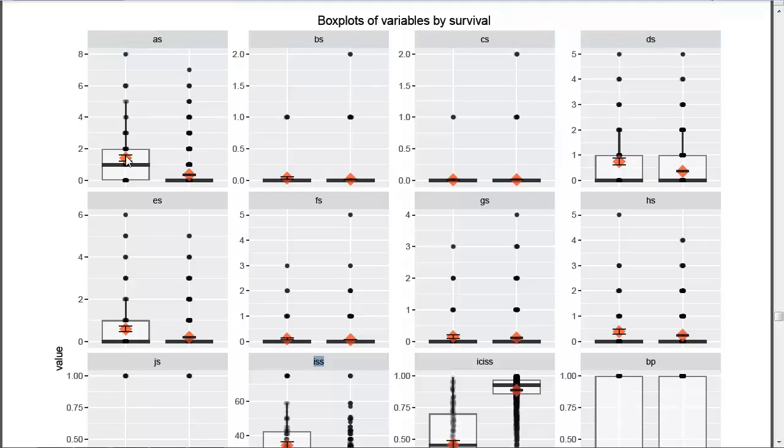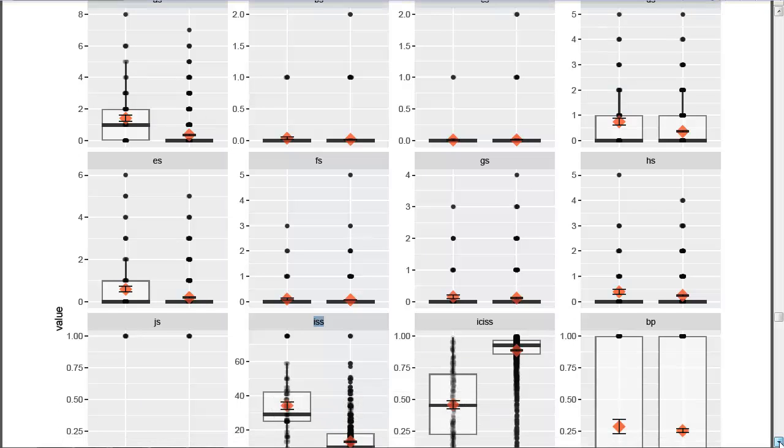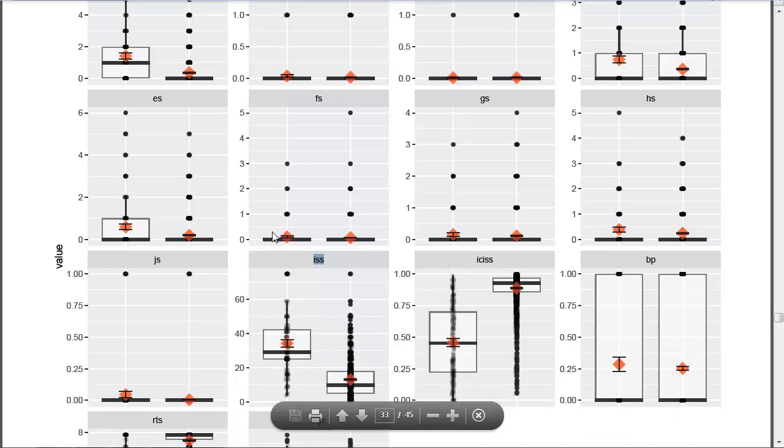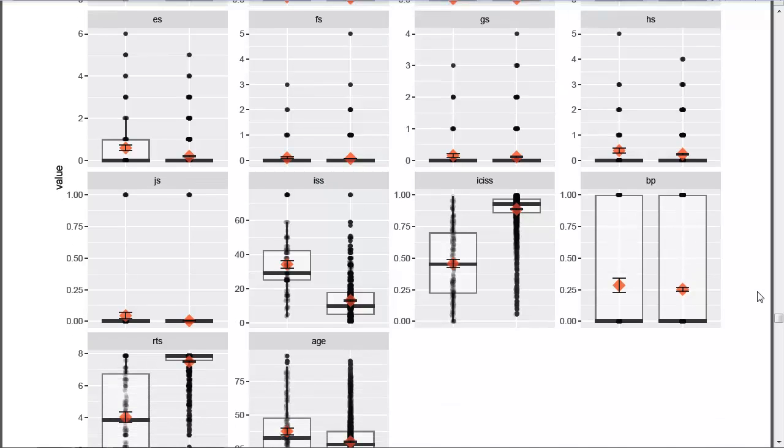For the head, certainly the more severe your head injury, the more likely you are to not survive. Face doesn't matter very much. It looks like the more severe your thorax injury, the less likely you are to survive, also for your abdomen, your stomach. F, G, H, these are very small differences, though generally speaking, the higher the score, the more likely you are to be in the did not survive category.